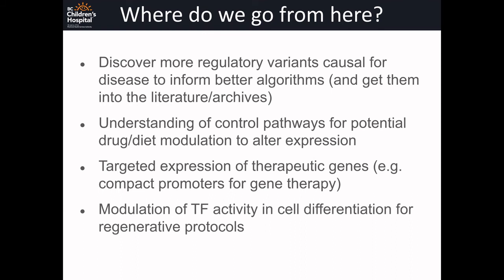So where do we go from here? We need to discover more regulatory variants that are causal for disease so that we can inform and develop our algorithms better. We need to understand the control pathways so that we can modulate gene activity — a lot of what we're seeing is a desire to change the expression of these genes for therapeutic benefit. We need to be able to deliver therapeutic expression of genes, deliver targeted expression, which means we need to develop our capacity with promoters to do that. And we need to be able to modulate transcription factor activities for cell differentiation, because that's going to be key to developing regenerative protocols.